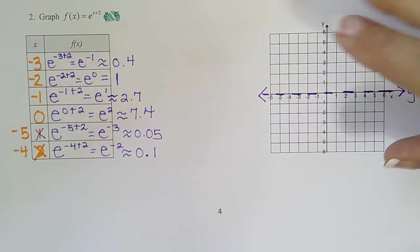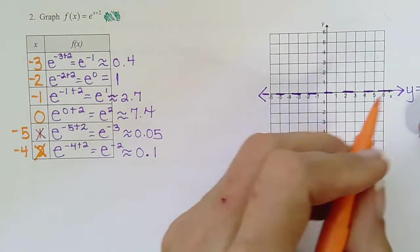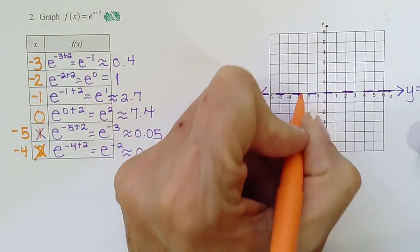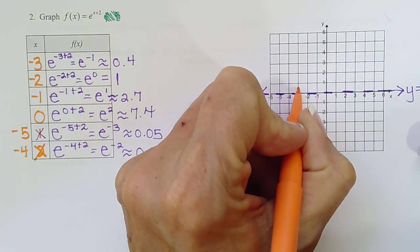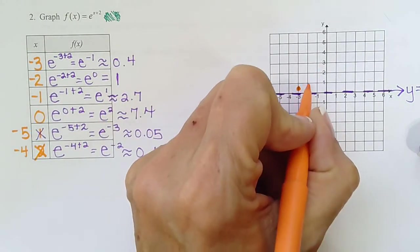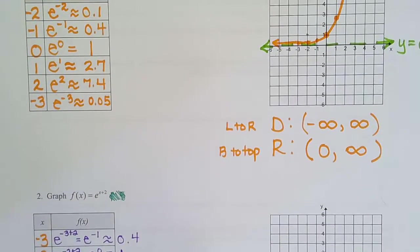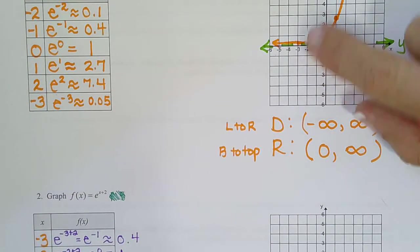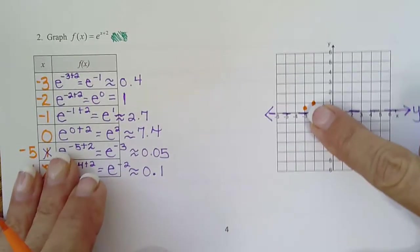We have negative 3, almost a half. So negative 3, just a little bit under a half. Negative 2, 1. Remember how we said every exponential has the point 0,1. But if you shift it left 2, it's negative 2,1, which is this point.